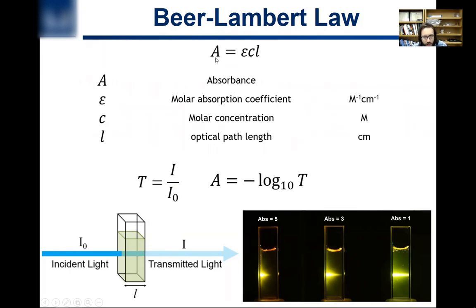So the important law here is that absorption is equal to epsilon times C times L. L is the optical path length. I think this makes sense. If you increase the path length of the cuvette, you're going to have more molecules in there.